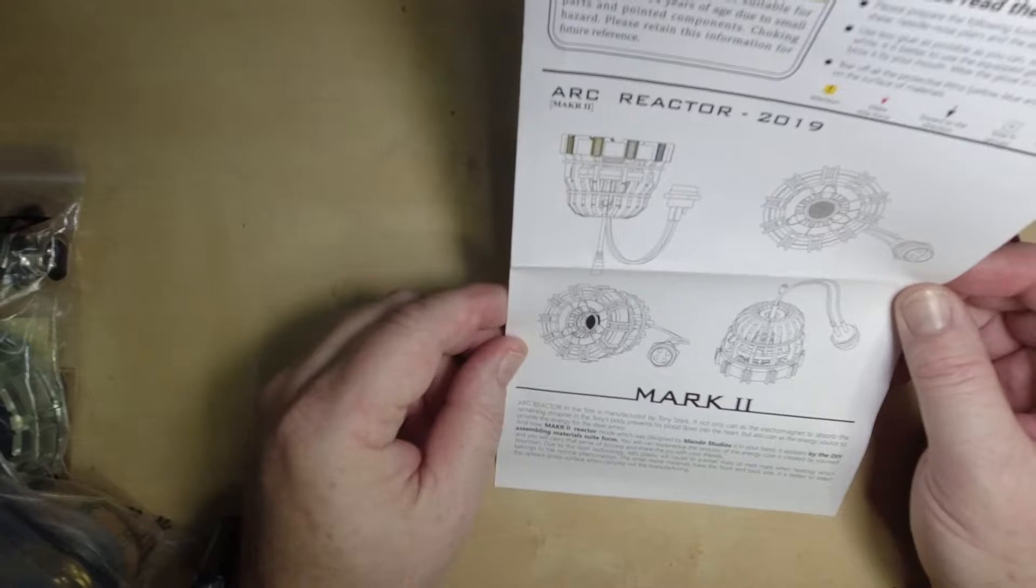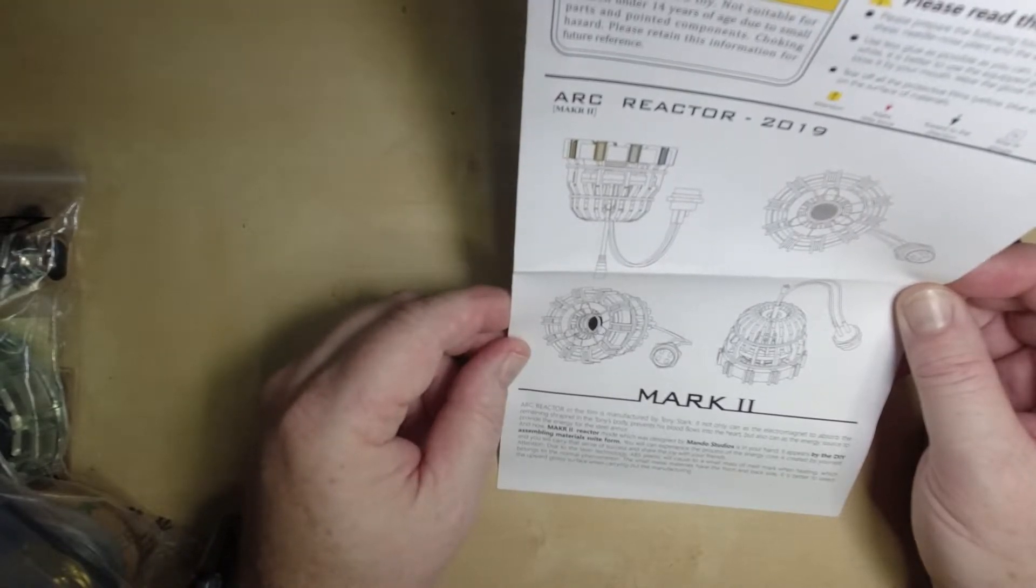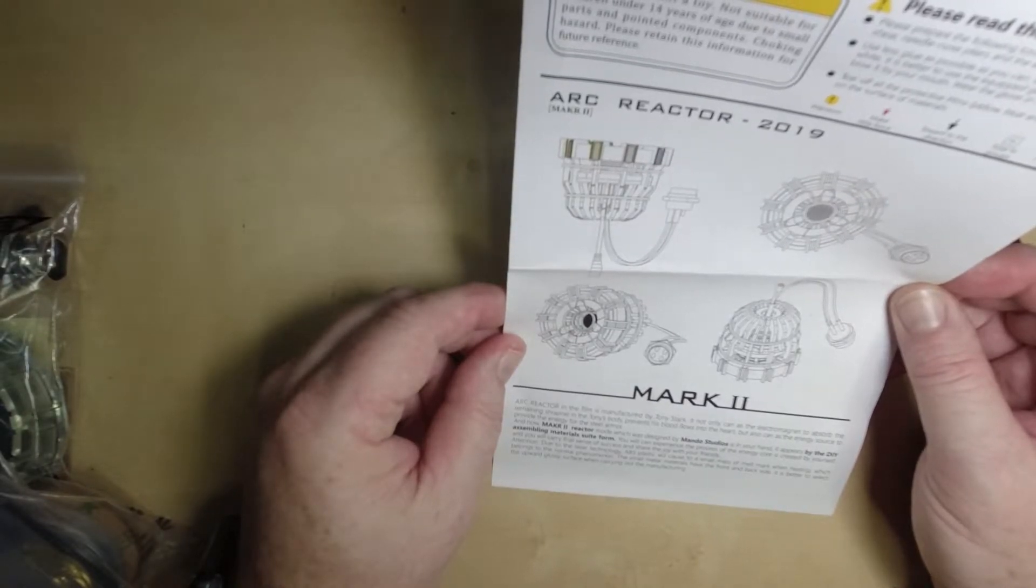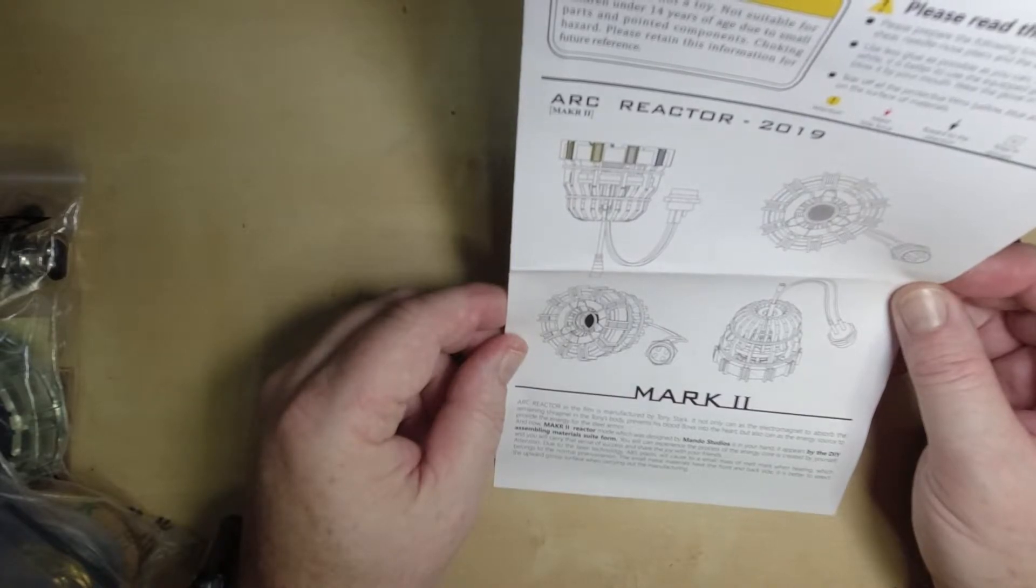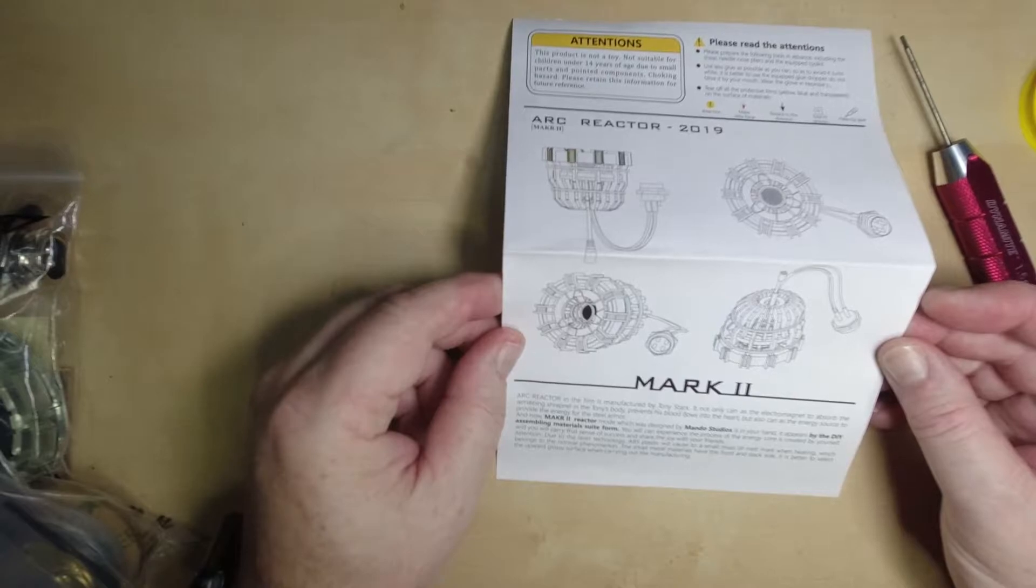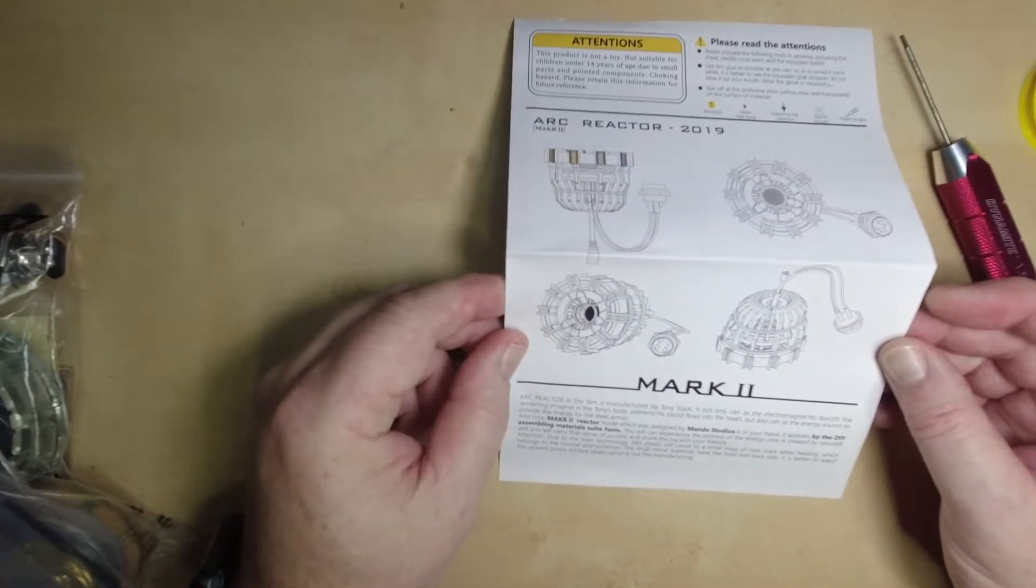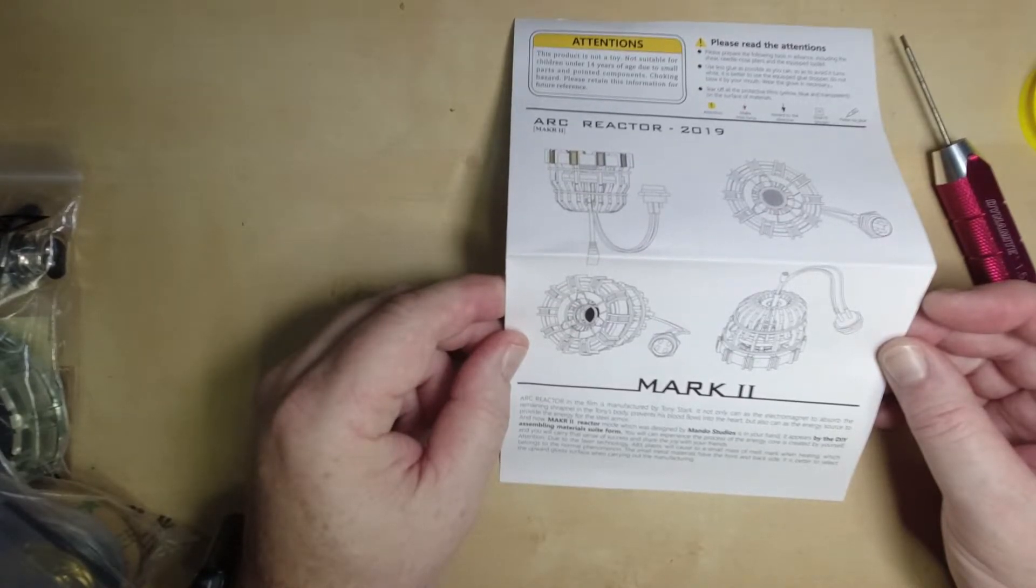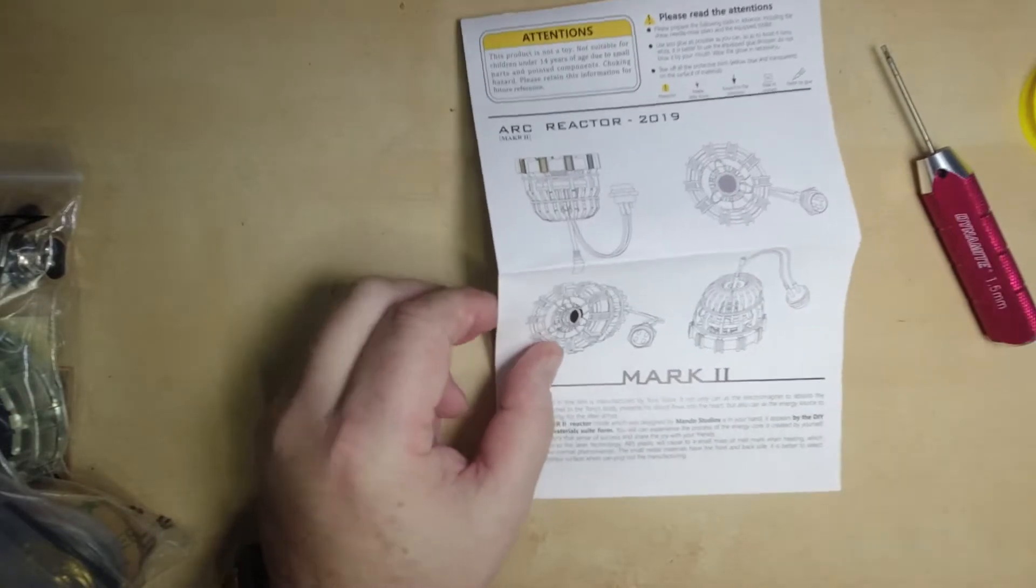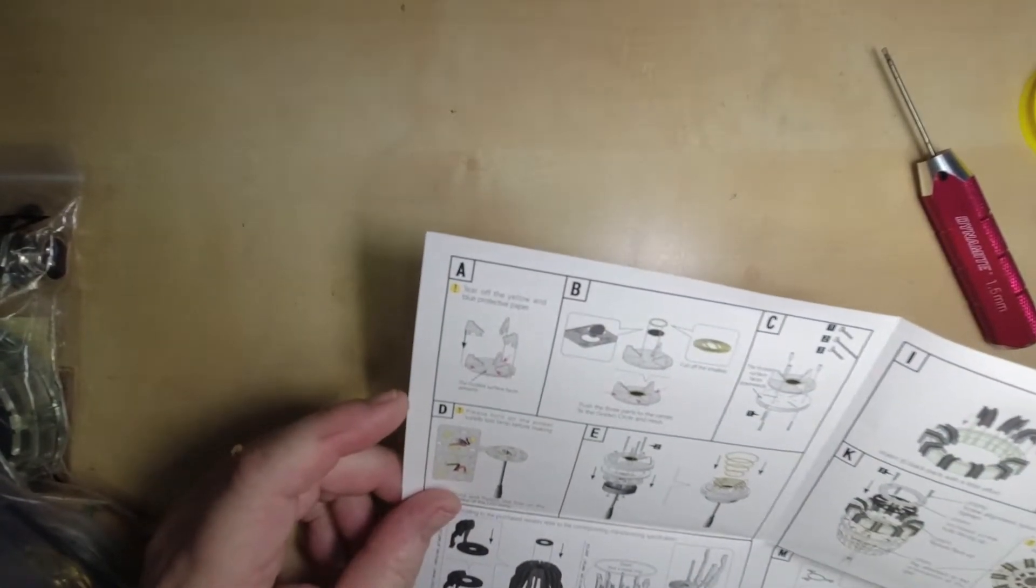It was designed by Mando Studios. Oh, Mando? It is in your hand. It appears by the DIY assembling materials suite form. You will can experience the process of the energy core is created by yourself. And you will carry that sense of success and share the joy with your friends. Due to the laser technology, ABS plastic will cause a small mass of melt mark when heating, which belongs to the normal phenomenon. I think they're trying to say there might be some extra flash. The small metal materials have the front and back side. It is better to select the upwards glossy surface. So they're saying there's a glossy side and a dull side. Keep the shiny side out, I guess.